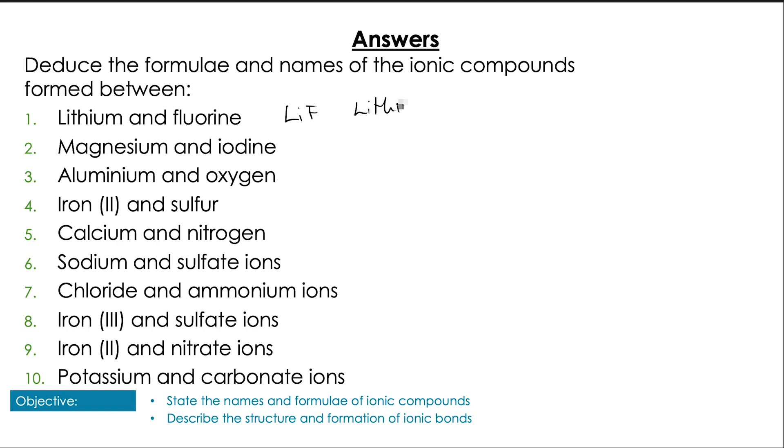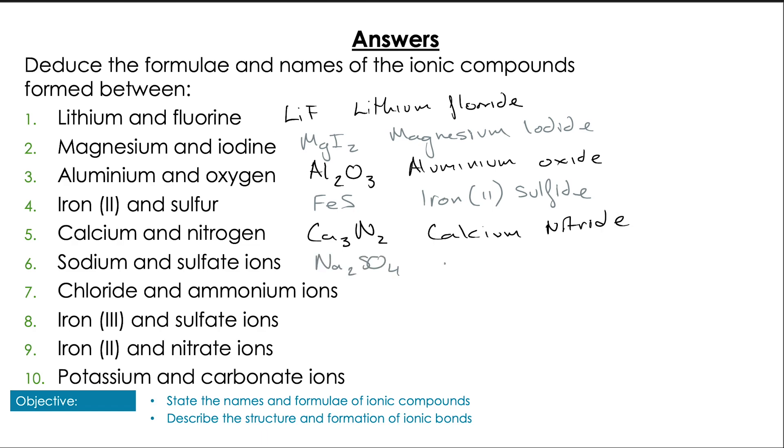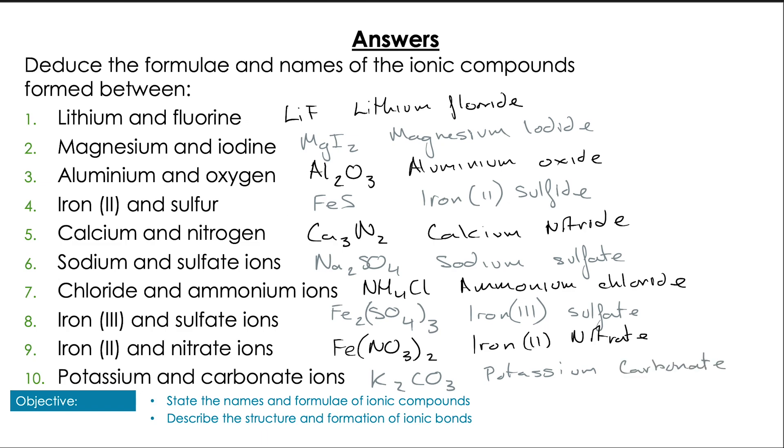Here are some questions you can practice, pausing and taking a bit more time for yourself to do them, where we're just looking at adding the atoms and ions together and giving the names and formulae of ionic compounds. I'll just run through the answers. Number one: LiF, lithium fluoride. Number five: Ca3N2, calcium nitride. Number six: Na2SO4, sodium sulfate. Number seven: NH4Cl, ammonium chloride. Number eight: Fe2(SO4)3, iron(III) sulfate. Number nine: Fe(NO3)2, iron(II) nitrate. Number ten: K2CO3, potassium carbonate. Okay, so hopefully you got some good practice there.